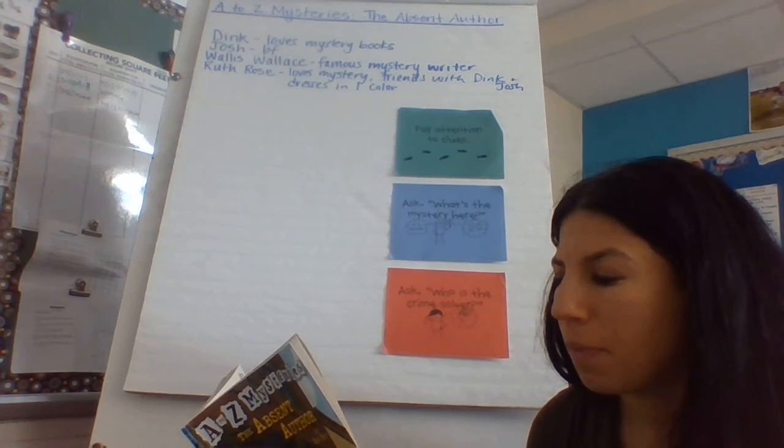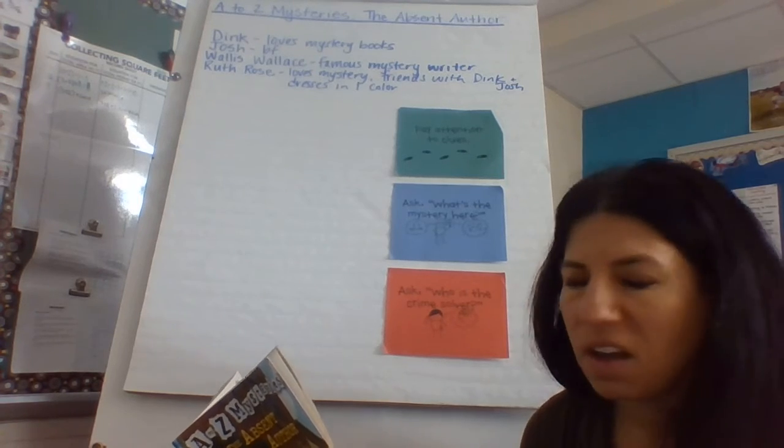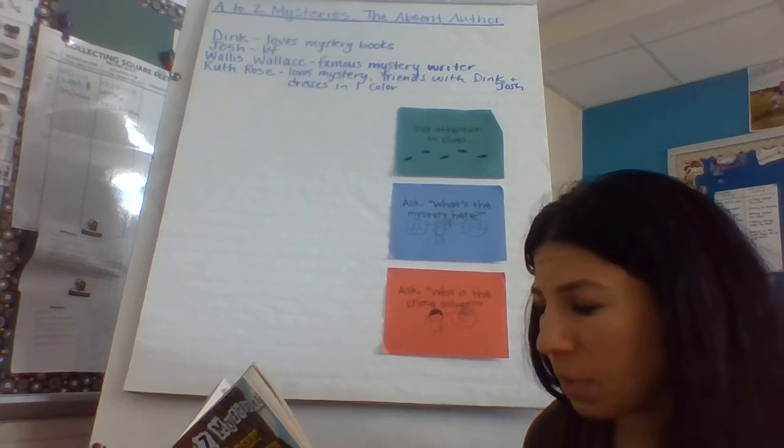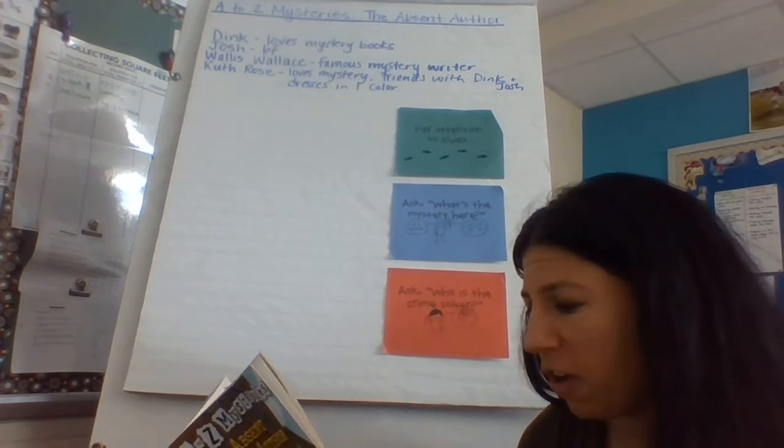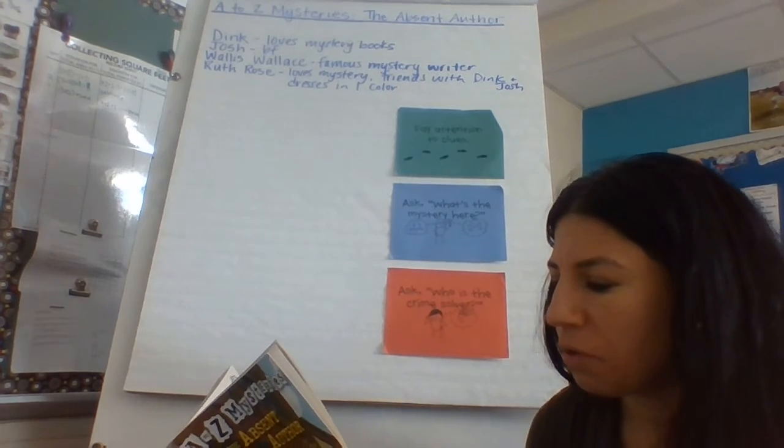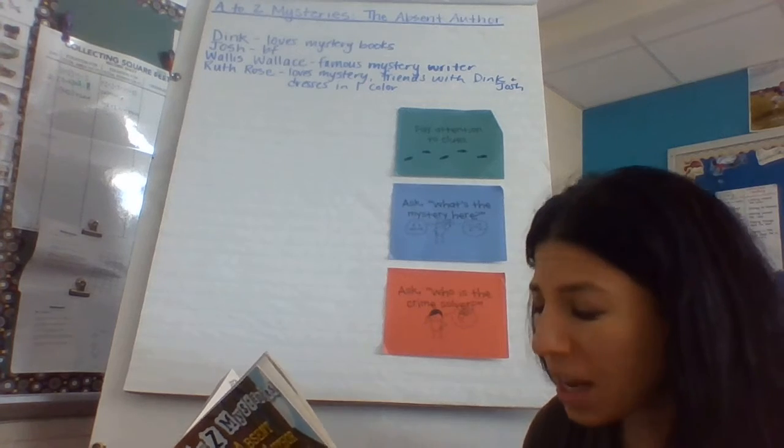Finally Dink got up and walked out. Josh and Ruth Rose were waiting for him. What's the matter, Ruth Rose? You look sick. I am sick, Dink mumbled. I invited him here. It's all my fault. What's all your fault, Josh asked. This, he said, thrusting the letter into Josh's hands. Wallace Wallace has been kidnapped.